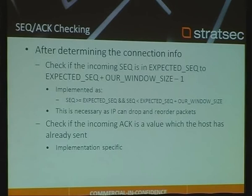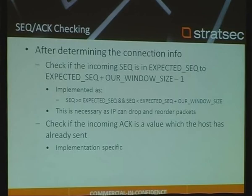Implementations also sometimes check the ACK value. The check that should be done is: is this something we have sent, and is this not lower than what they've already acknowledged? It should really just be: is this something we have sent?